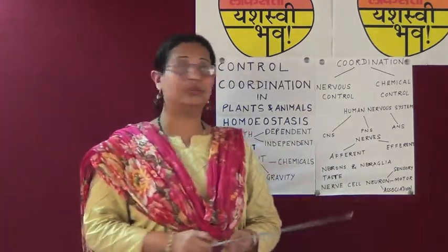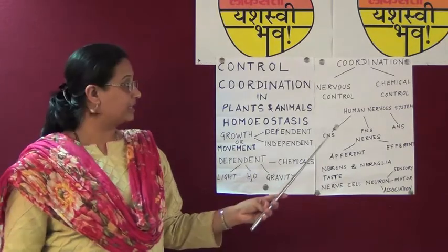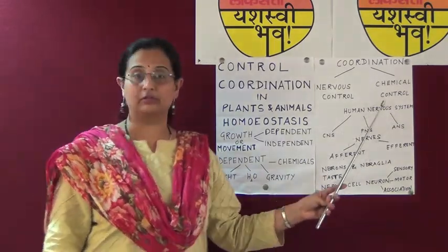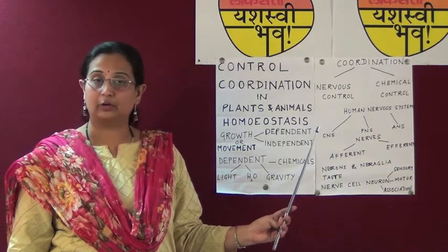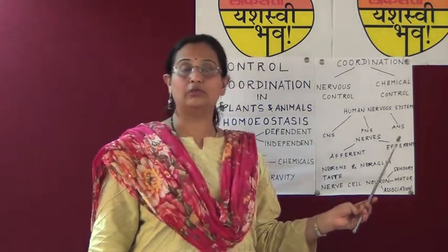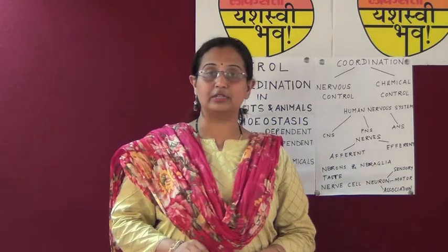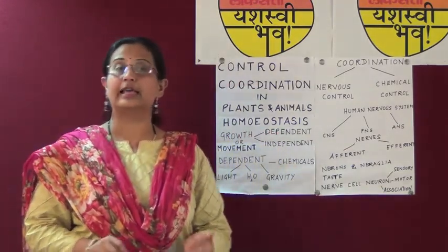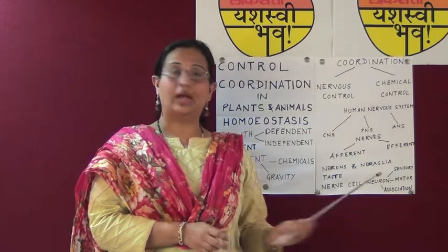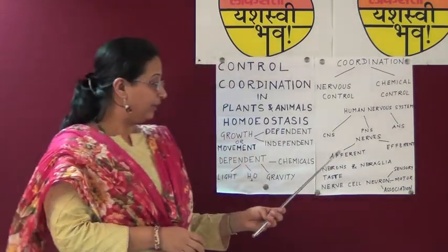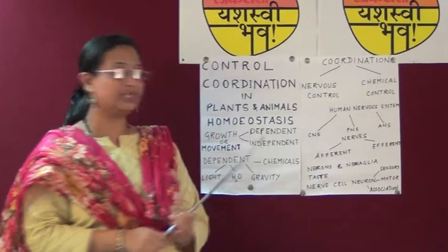Coordination happens because of nervous control or chemical control. The human nervous system consists of the central nervous system, the peripheral nervous system, and the autonomic nervous system. The central nervous system consists of the brain and the spinal cord. The peripheral nervous system consists of the nerves or the network of nerves originating from different parts of the body. The autonomic nervous system consists of nerves from the involuntary organs like stomach, heart, lungs, kidneys, etc. Nerves are categorized into afferent nerves and efferent nerves. Afferent nerves carry the information from the sensory organs to the brain, whereas efferent nerves carry the information from the brain to the sensory organs.